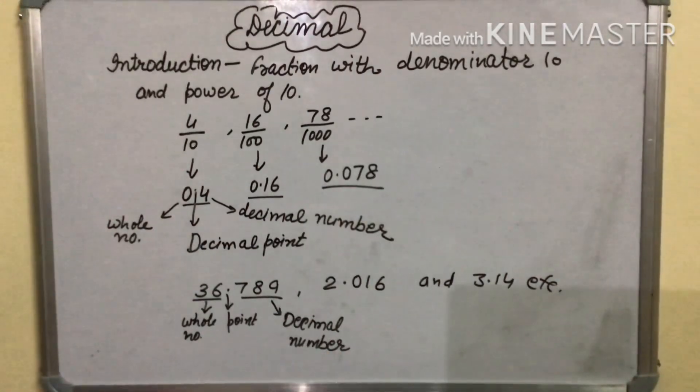How we read it? We read as 36.789. We read the decimal number and the digits in the decimal number separately as 789. Like this we read it 2.016 and this is 3.14.